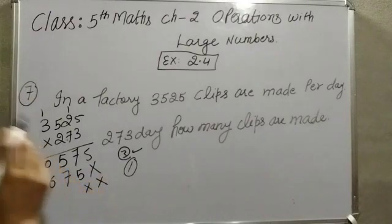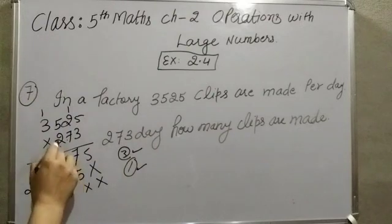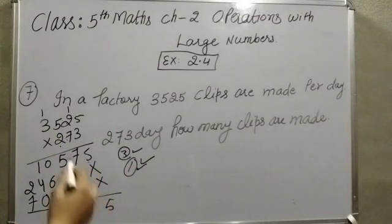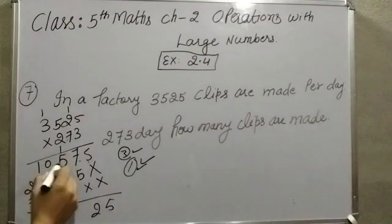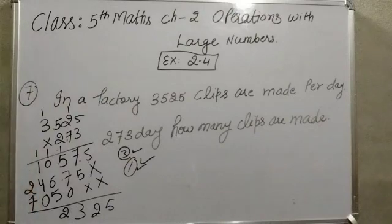Next multiply by 2: 2 × 5 = 10, so 0 here with 1 carry; 2 × 2 = 4 plus 1 = 5; 2 × 5 = 10, 0 here with 1 carry; 2 × 3 = 6 plus 1 = 7. Now adding all partial products: 7 plus 5 = 12, 2 here with 1 carry; 7 plus 5 = 12 plus 1 = 13, carry; 6 plus 5 = 11 plus 1 = 12, 2 here carry; 4 plus 5 = 9... 4 plus 1 = 5, 5 plus 1 = 6; 7 plus 2 = 9. So the answer is found.